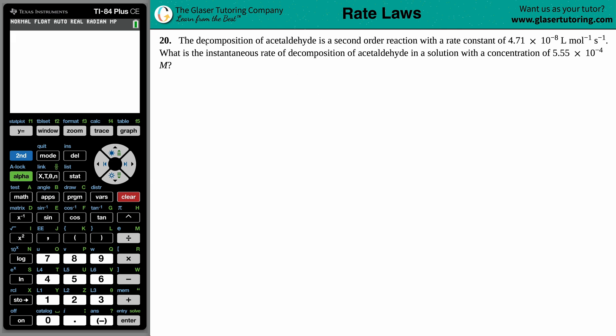Number 20. The decomposition of acetaldehyde is a second-order reaction with a rate constant of 4.71 times 10 to the negative eighth liter per mole per second. What is the instantaneous rate of the decomposition of acetaldehyde in a solution with a concentration of 5.50 times 10 to the negative fourth molarity.